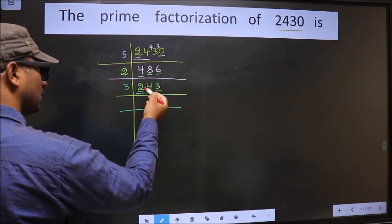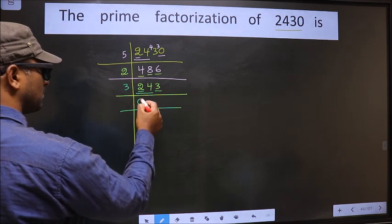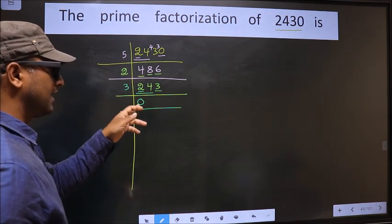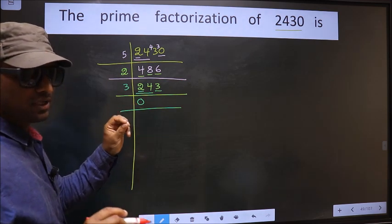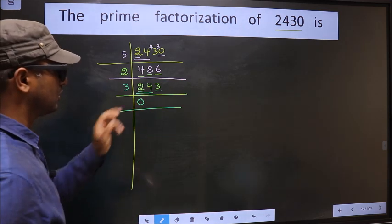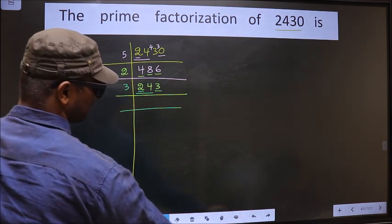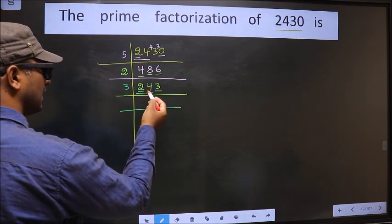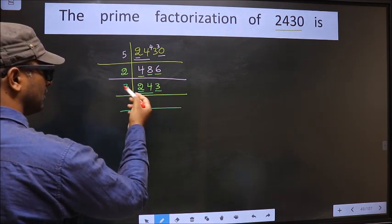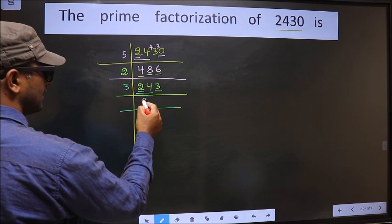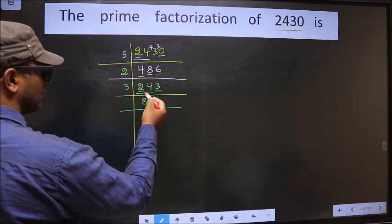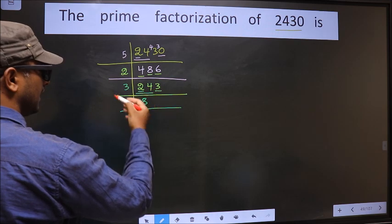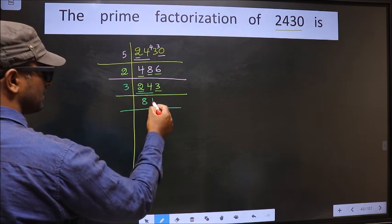Whenever you take 2 numbers, compulsory you should put 0. But 0 at the start does not count, so no need to write 0 at the start. Here we have 24. When do we get 24 in the 3 table? 3 eights 24. The next number is 3. When do we get 3 in the 3 table? 3 ones 3.